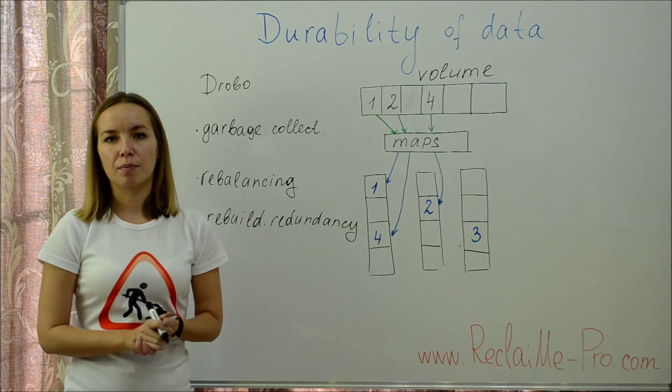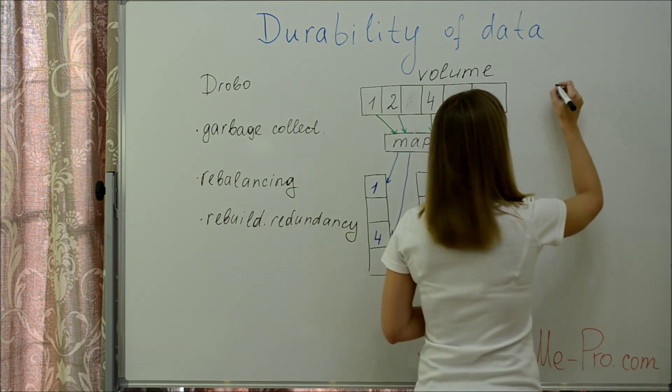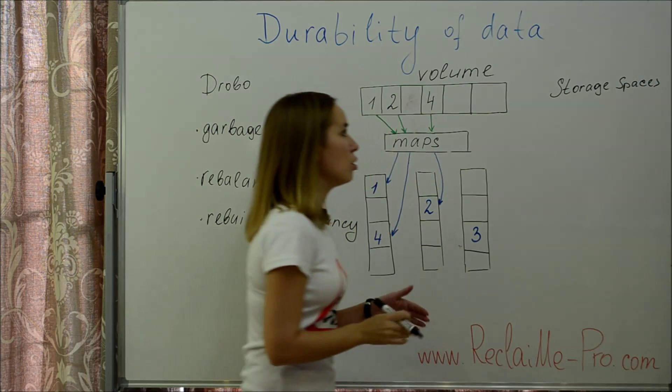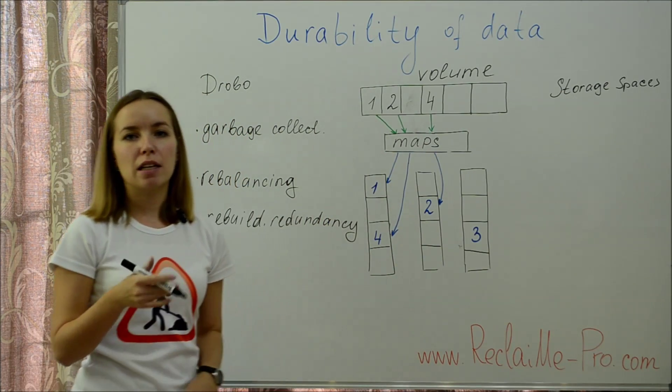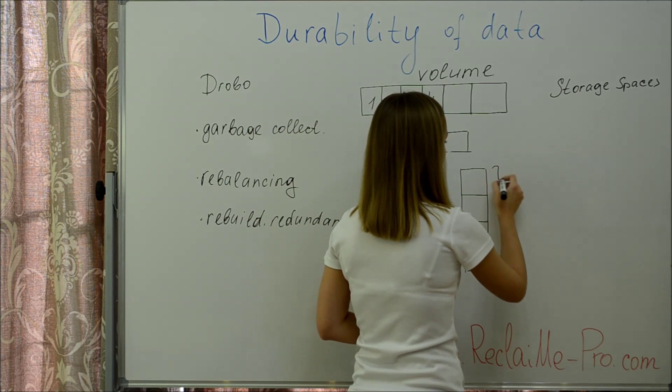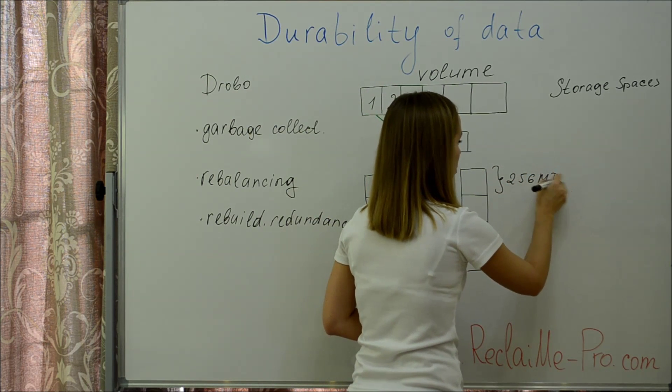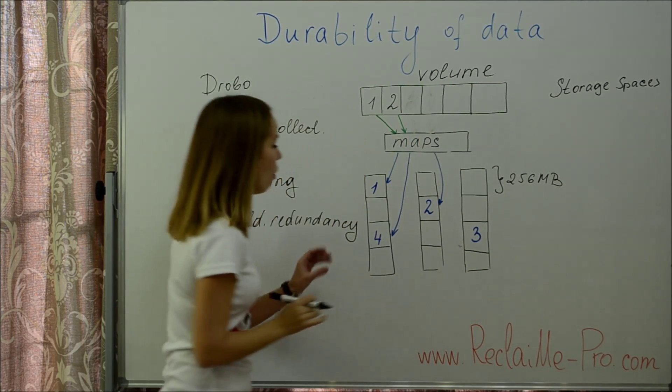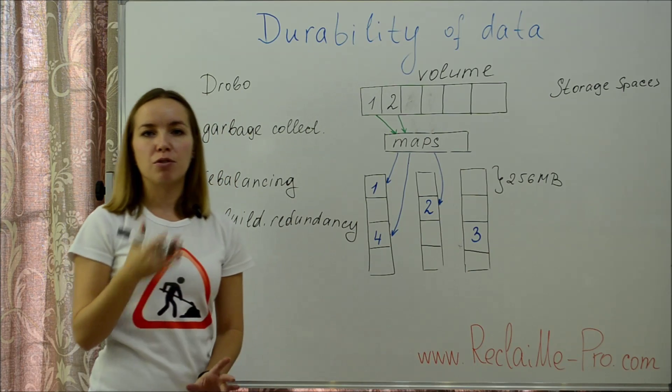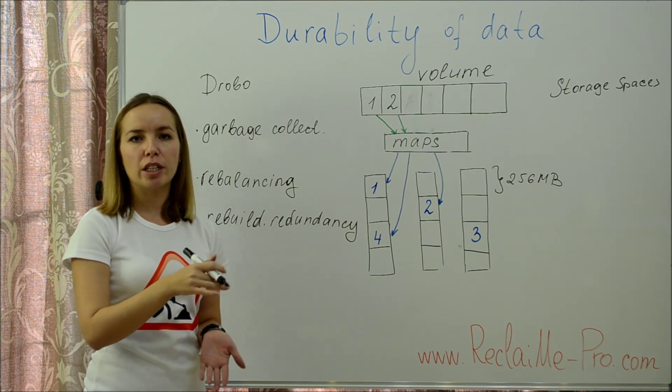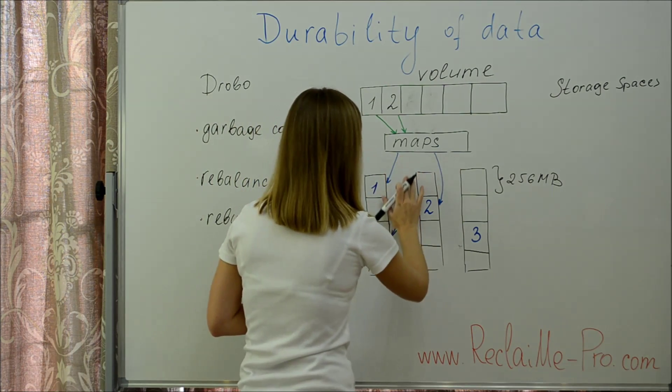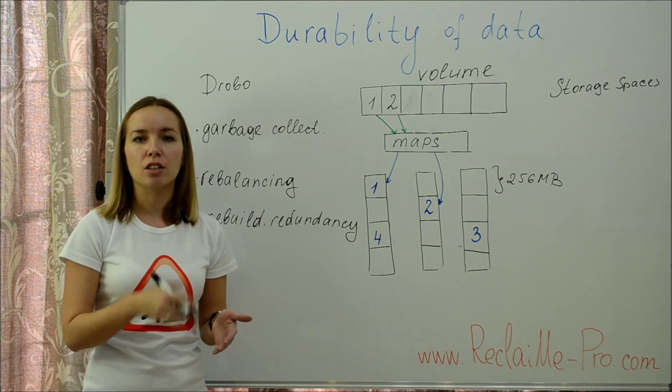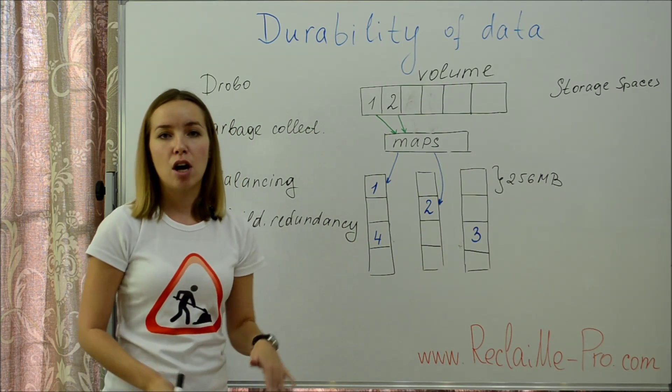Another complex storage system is Microsoft Storage Spaces. Storage Spaces uses the similar map-based approach but unlike a Drobo operates with much larger blocks, with 256 MB blocks. If you delete a file in such a way that the whole 256 MB block becomes free, Storage Spaces returns this block into a pool of free blocks and forgets about it, making it difficult to restore the file content when the need arises. You can see that like in Drobo, the actual file content is still on the disk but pointers are lost.